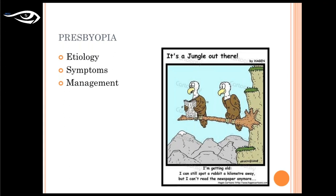Since there is a problem, there should be management. Over the years many management options have been available: single vision reading glasses, separate distance and near glasses, bifocals, trifocals. Contact lenses are also evolving for presbyopia — multifocals, monovision, modified monovision. Surgical options such as clear lens extraction and presbyopic LASIK are also available. However, as statistics show, progressive addition lenses remain the foremost and most commonly prescribed correction for presbyopia.